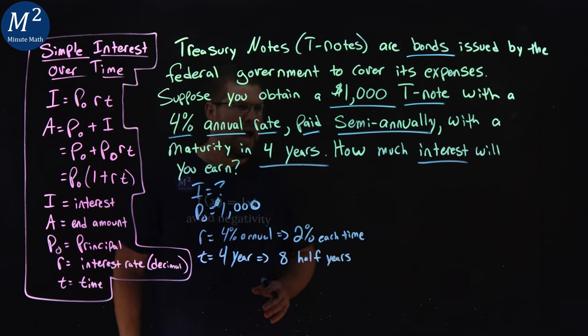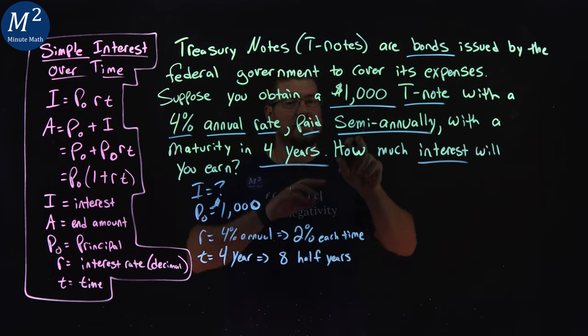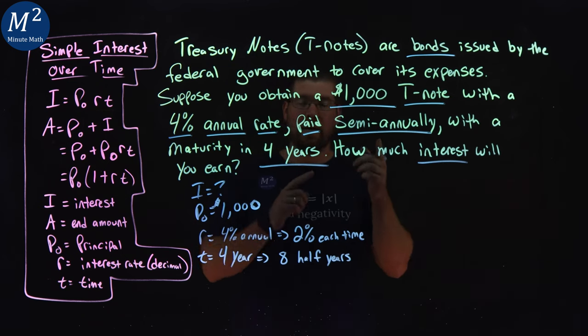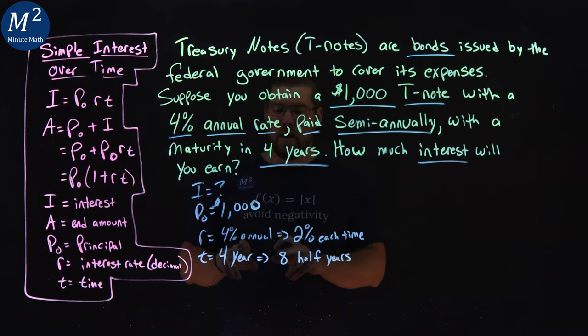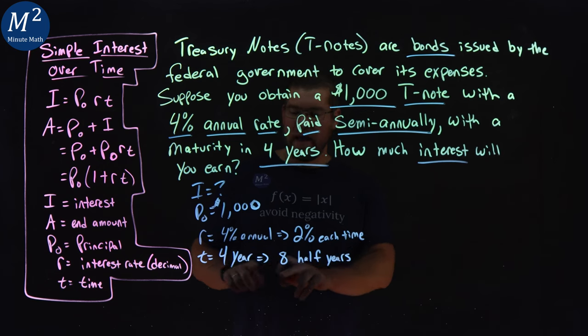Another way to write that—that's what's really going with that semi-annually, where we're talking about how often it is paid. So again, that paid semi-annually tells us it's 4% annually, 2% each half year. So it's twice 2%. And instead of 4 years, we have 8 half years.